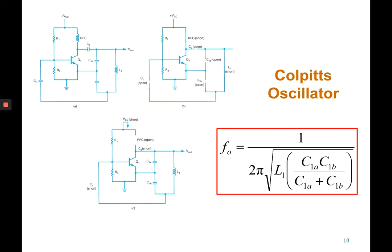For the Colpitts, almost similar configuration circuit using a transistor. The emitter here will connect to two capacitors and a coil. It will use one C1A and C1B and one coil L1. For the frequency of oscillation, the equation is a little bit complicated. You need to find the total of capacitance by using C1A times C1B divided by C1A plus C1B, and times with L1. Get the square root of the value and then times with 2 pi.